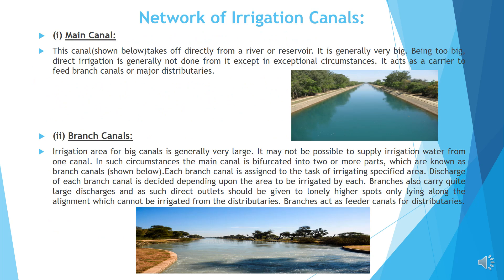What is main canal? This canal, as you can see here, takes off directly from a river or reservoir. It is generally very big. Being too big, direct irrigation is generally not done from it, except in exceptional circumstances.